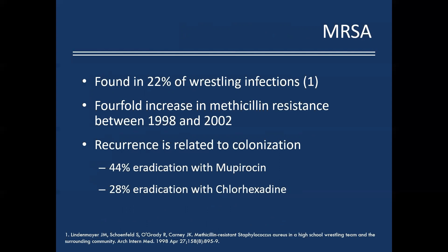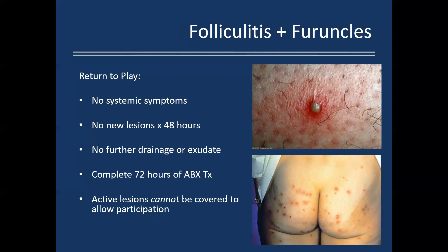MRSA is incredibly common in athletes — found in 22% of wrestling infections, with a four-fold increase between 1998 and 2002. Recurrence is related to colonization: 44% eradication with mupirocin in the nares, 28% with chlorhexidine. Practically, athletes are more likely to use a special soap than apply ointment in their nose twice daily, so chlorhexidine often works better in practice. Return to play: same criteria as impetigo — no systemic symptoms, no new lesions for 48 hours, no drainage, 72 hours of antibiotics. Active lesions cannot be covered.